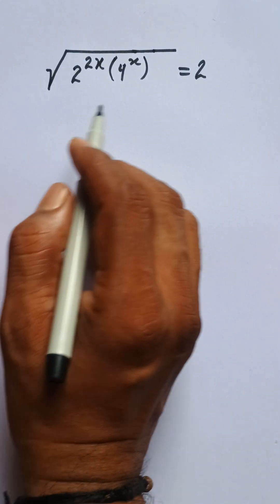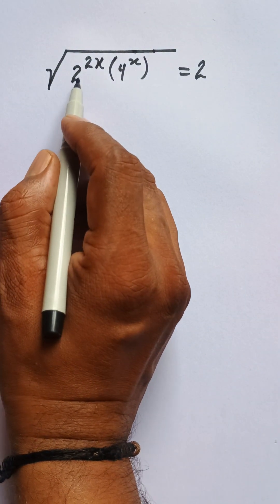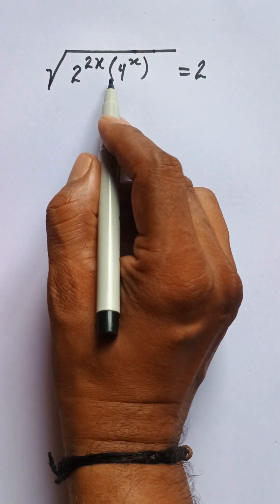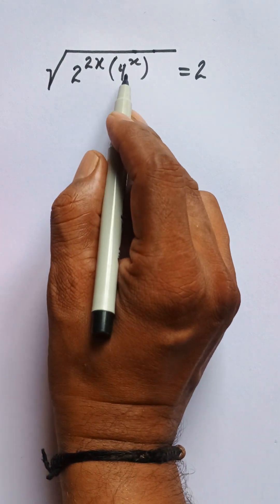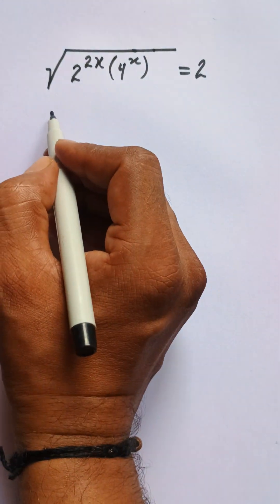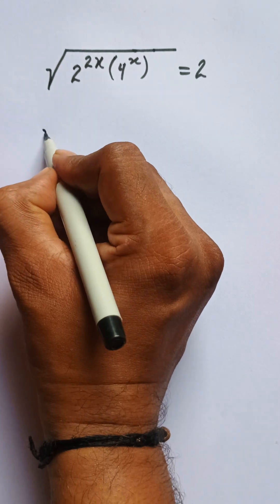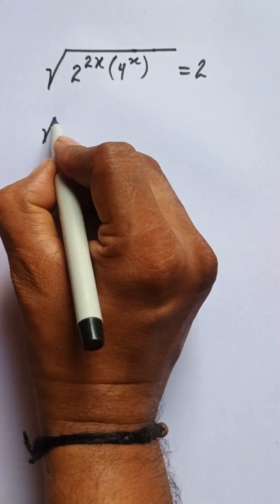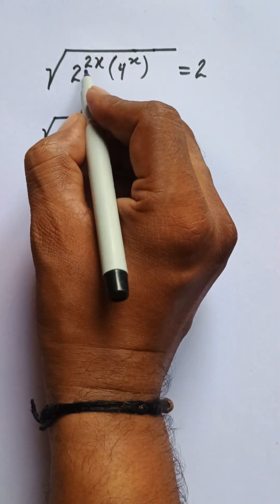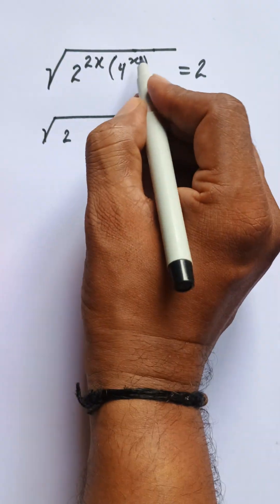Hello everyone, let's solve this problem. We have root under 2 to the power 2x, into 4 to the power x, equal to 2. Here we have 2 to the power 2x and 4 to the power x.